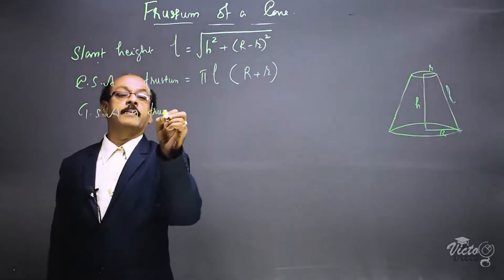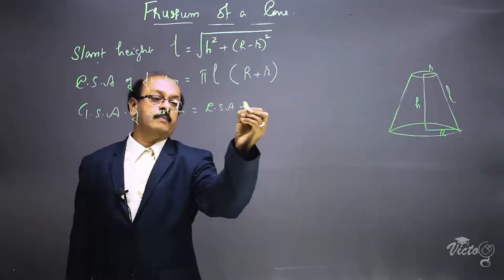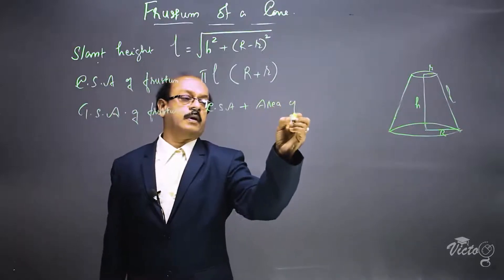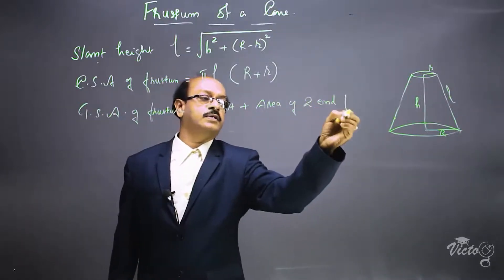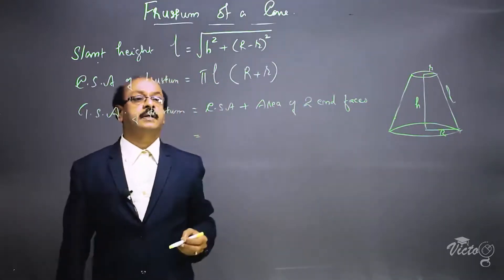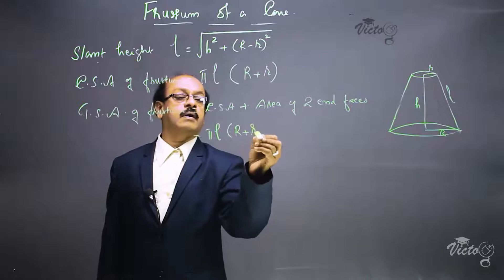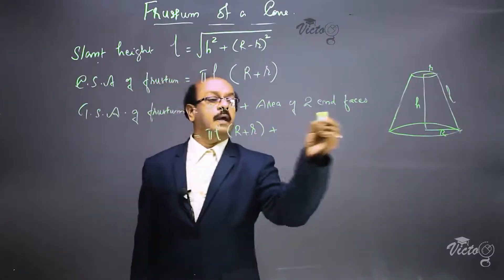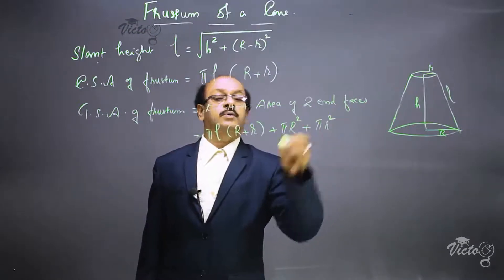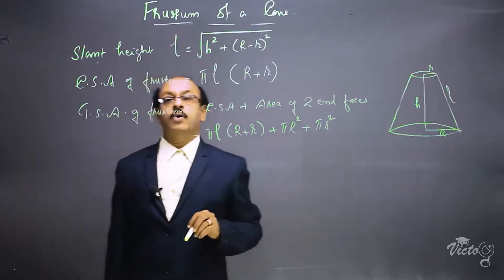The total surface area of the frustum equals CSA plus the area of the two end faces. That is: TSA = π·l·(R + r) + π·R² + π·r². The CSA term is π·l·(R + r), and the two circular end faces contribute π·R² and π·r².